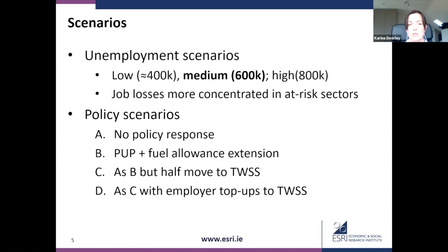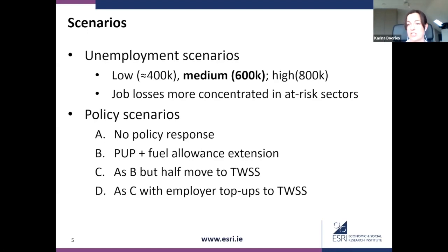In terms of unemployment scenarios, the low scenario assumes that 400,000 people lose their job, the medium assumes 600,000, and the high scenario is 800,000 people. About a week or two ago when we were coming up with these simulations, this seemed like a reasonable low, medium, and high scenario. Today you might think the low is very low and the medium is really where we are. It just reflects how quickly things are moving. Our estimates are quite scalable, so we can approximate a cost per 100,000 unemployed individuals.